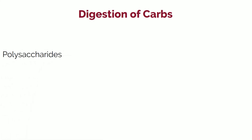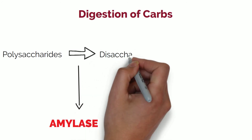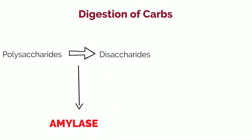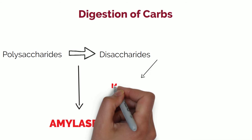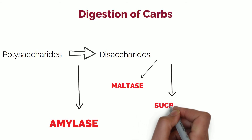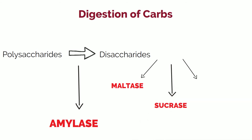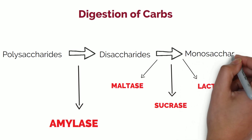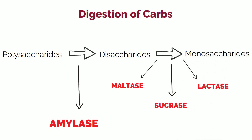Two enzymes are involved in the breakdown of carbohydrates. Complex carbohydrates called polysaccharides have more than 10 molecules. The enzyme amylase turns polysaccharides into disaccharides, which have two molecules, and then other enzymes break down specific disaccharides: maltase breaks down maltose, sucrase breaks down sucrose, and lactase breaks down lactose. This process allows carbs to be broken down to monosaccharides such as glucose and fructose, as only monosaccharides can be absorbed in the intestines.